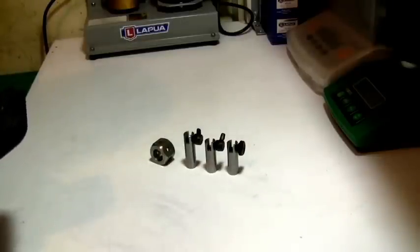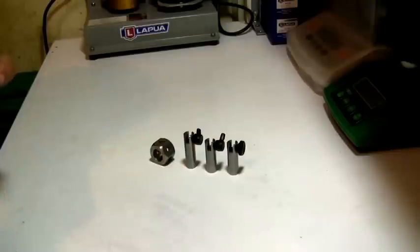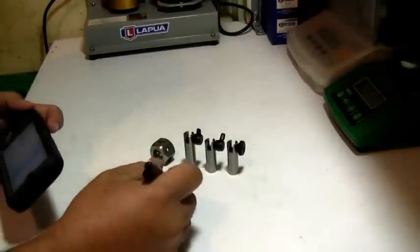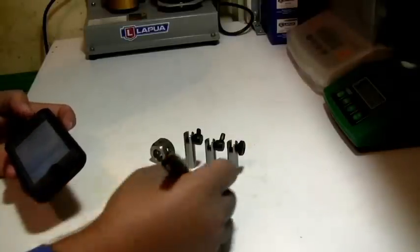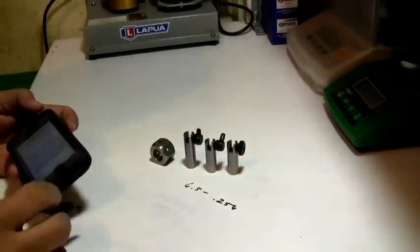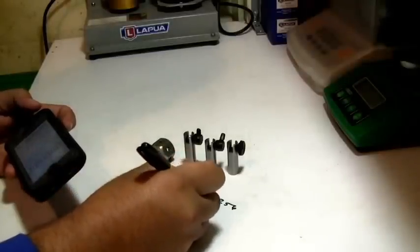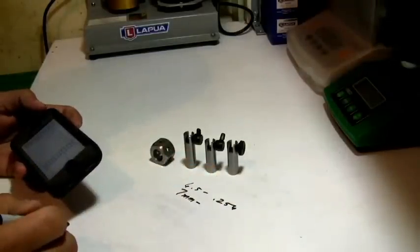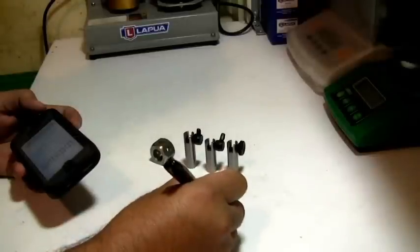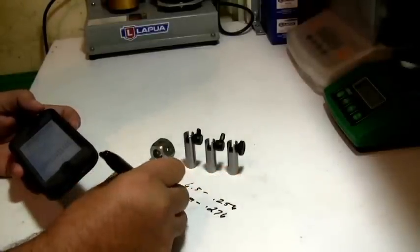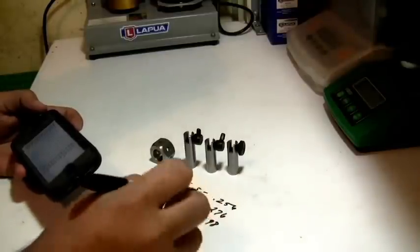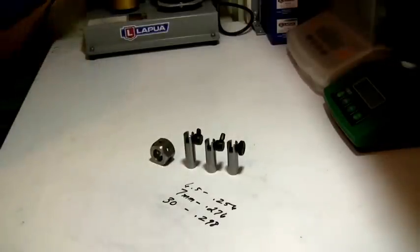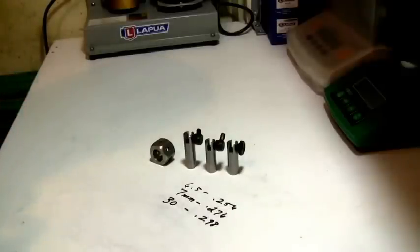If we go to the Brooks website and their 6.5 barrels, the bore is 256. On their 7 millimeter, their bore is 276, and their 30s, the bore is 298. So what does that mean? That's the actual bore of the barrel, not the land, not the grooves, but the lands.